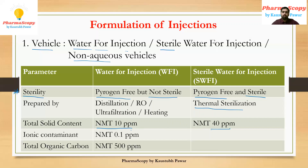Ionic contaminants for water for injection should be not more than 0.1 ppm. Please note all these important parameters for your GPAT perspective — in GPAT 2012 or 2011 there was a question on how much total solid content is present in sterile water for injection, and the correct answer was not more than 40 ppm. Total organic carbon content in water for injection is not more than 500 ppm.